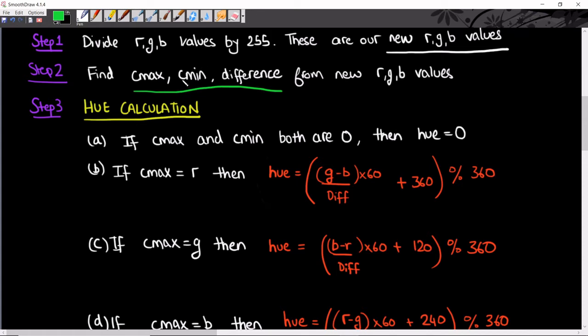If C max is R, then your hue is calculated by this formula: (G minus B) divided by difference, multiply by 60, add 360, and find the remainder when dividing by 360. This is the modulo operator. For example, 10 modulo 4 gives remainder 2.